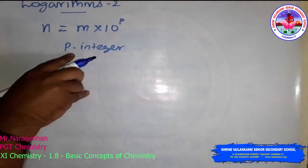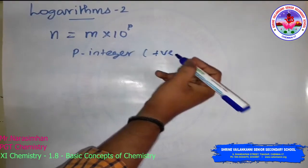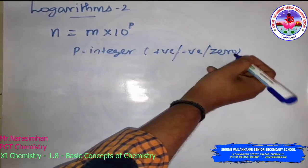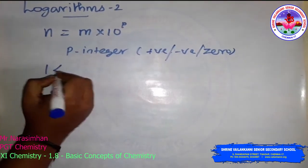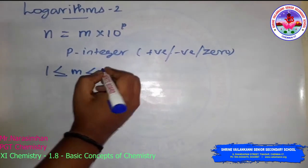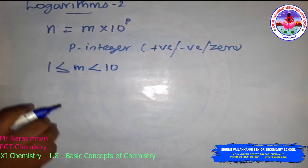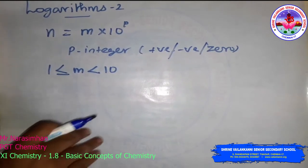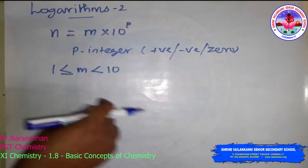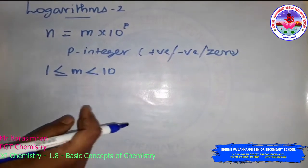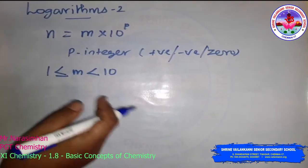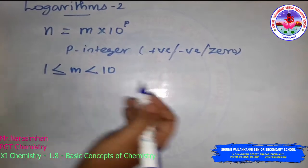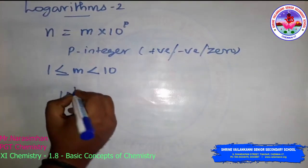The integer p may be positive, negative, or 0. That means 1 is less than or equal to m is less than 10. This is called the standard form. The working rule — how it works — is: move the decimal point to the left or to the right as may be necessary, to bring the non-zero digit to the left of the decimal point. If you move p places to the left, multiply by 10 power p.